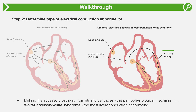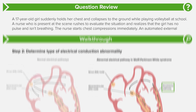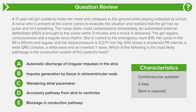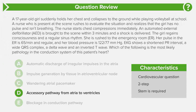Having an accessory pathway from atria to ventricles is the pathophysiology of a condition known as Wolff-Parkinson-White syndrome, which is the most likely conduction abnormality for this patient. Thus, the answer choice is D: accessory pathway from the atria to the ventricles.